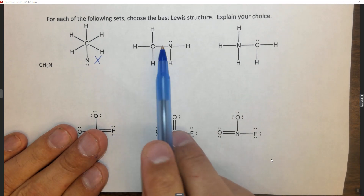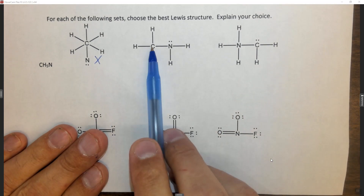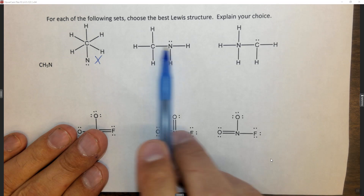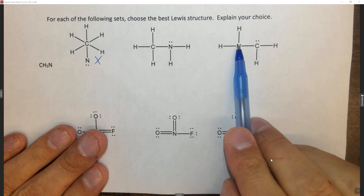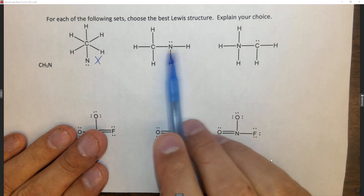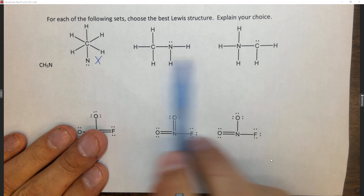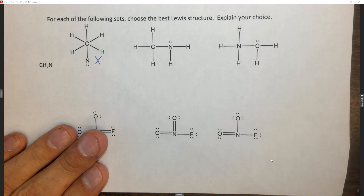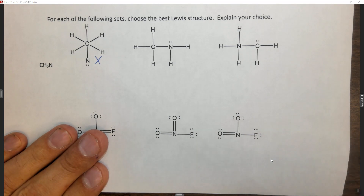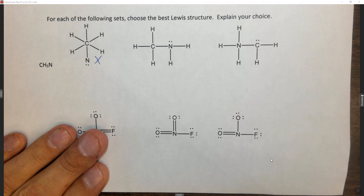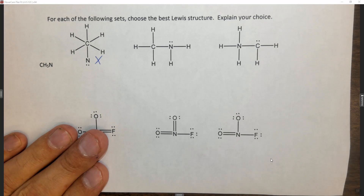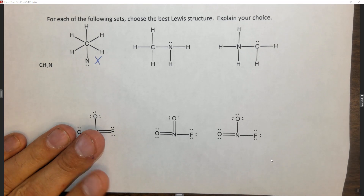In fact, the only difference between these Lewis structures is that carbon is here in one, and nitrogen is here in the other — carbon and nitrogen have switched. So these both look reasonable. How are we going to figure it out? By formal charges.